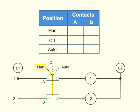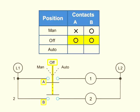Thus, in the MAN position, A is X or closed and B is O or open. At the OFF position, both A and B are O or open. With the selector switch set to AUTO, contact A is O or open and B is X or closed.